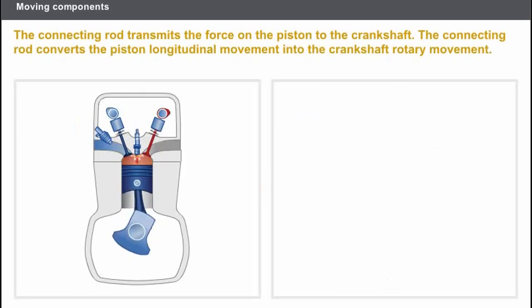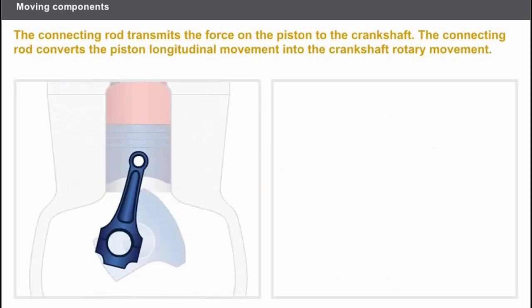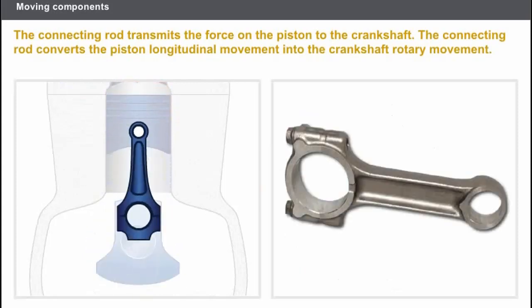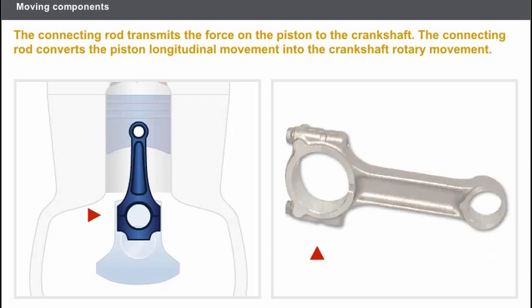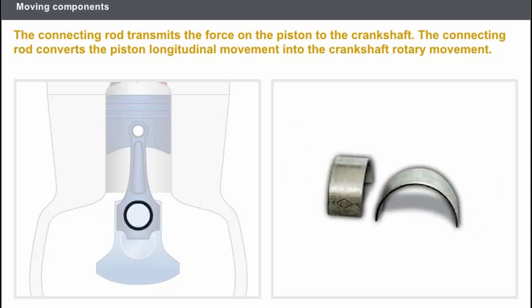The connecting rod transmits the force on the piston to the crankshaft, converting the piston's longitudinal movement into the crankshaft's rotary movement. The connecting rod, made of very high resistance forged steel, comprises a small end joined to the piston via the gudgeon pin, and a big end which rotates around the crankshaft and consists of a removable big end bearing cap. The two removable sections of the big end bearing are fitted with steel anti-friction main bearing shells, which are highly resistant to wear.